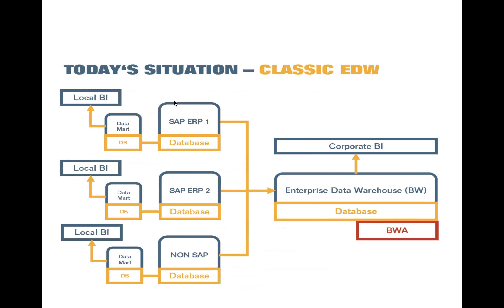Just to give you a little idea about our present situation in terms of the architecture: our enterprise might have different ERP and non-ERP systems which basically feed into an enterprise data warehouse. We have an existing database like Oracle or SQL supporting the amount of data. We used to have a physical server called the BW Accelerator which was able to improve the performance of our reporting area.